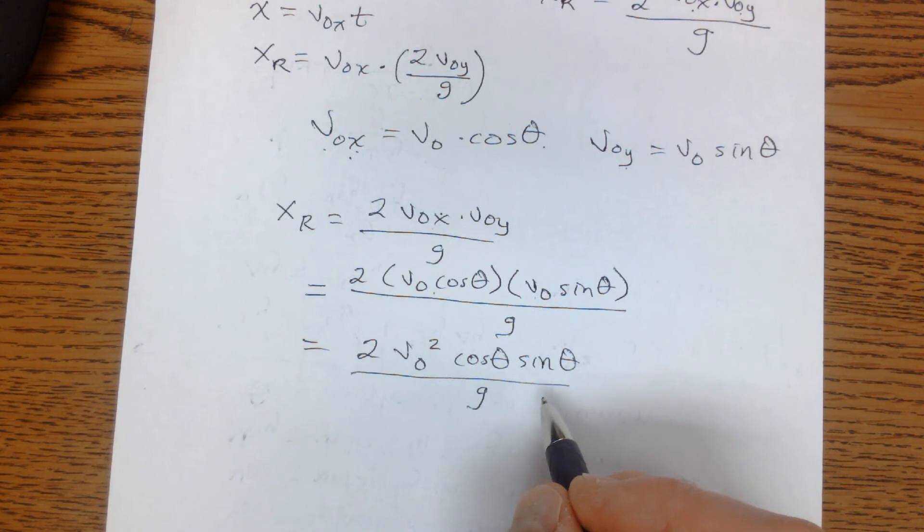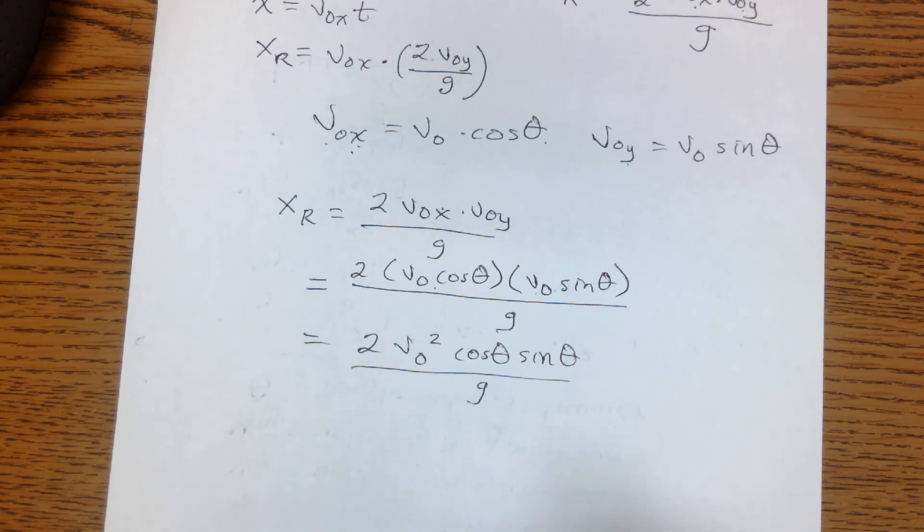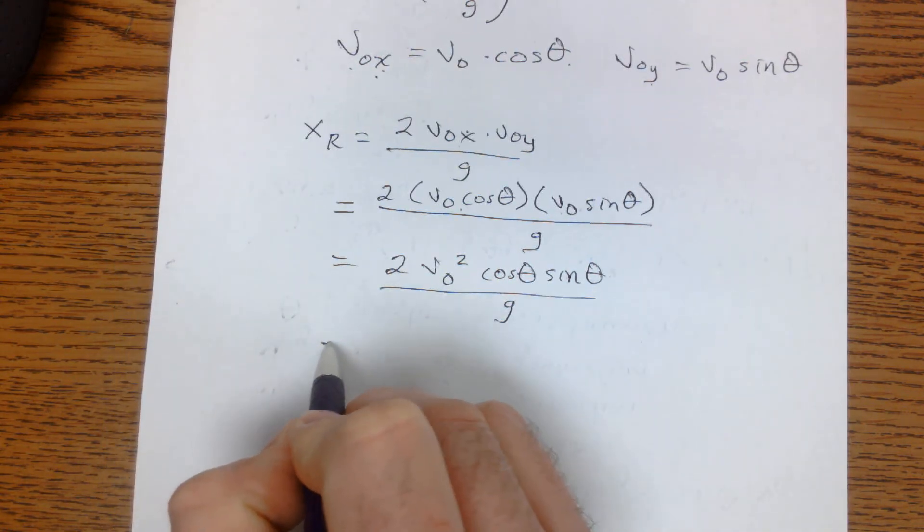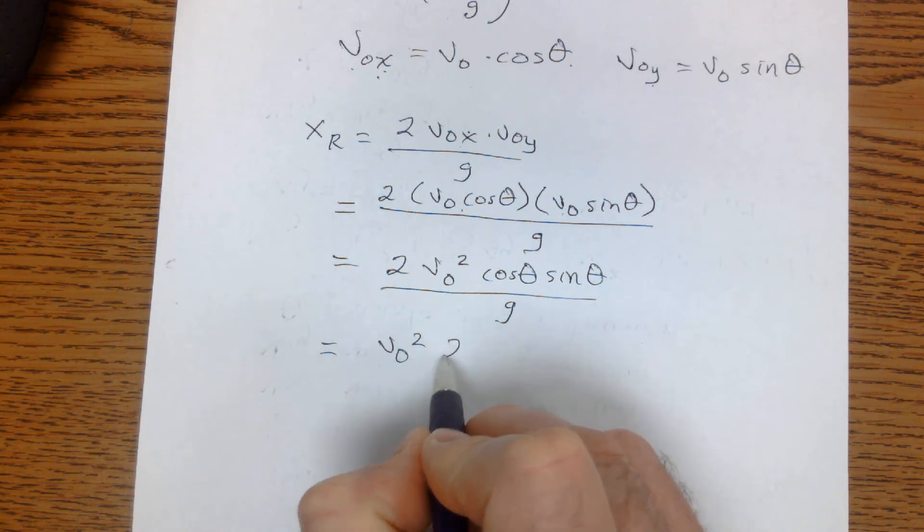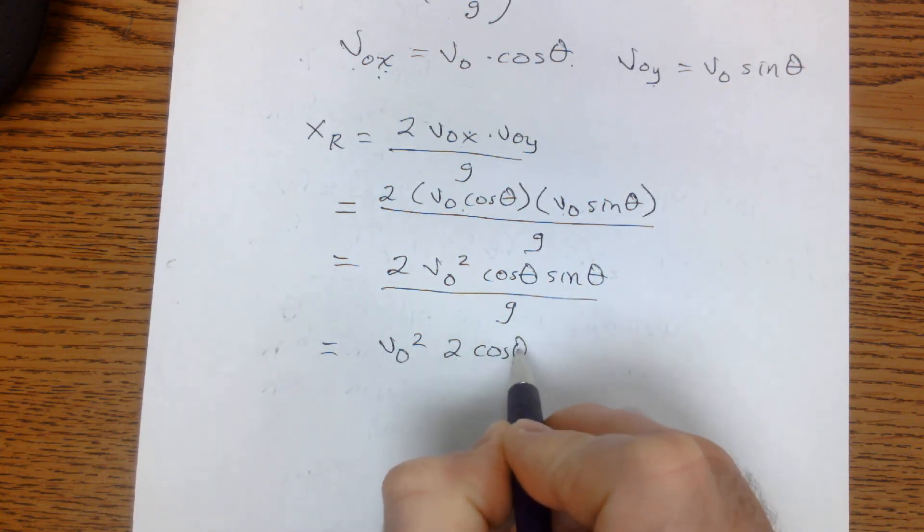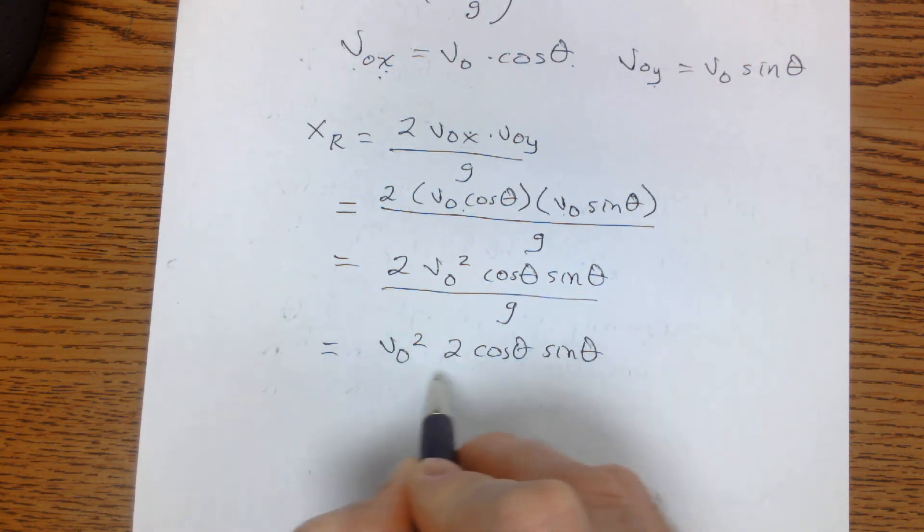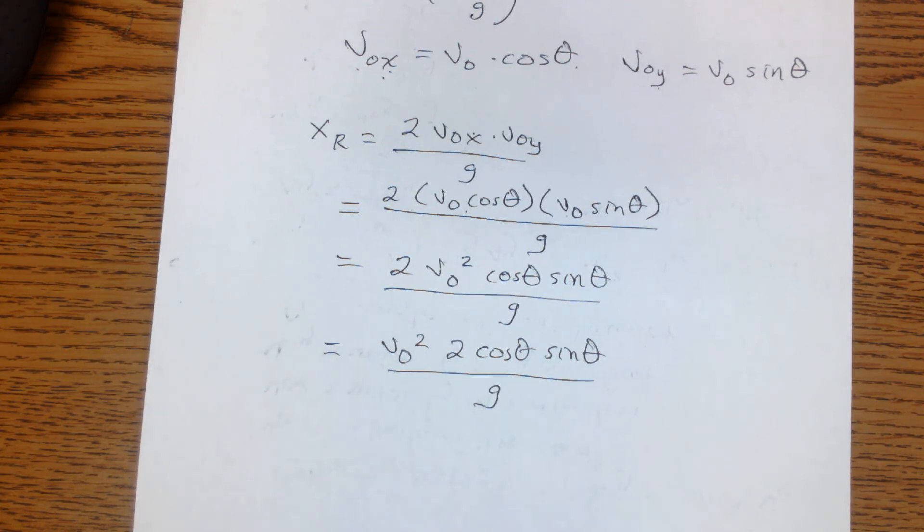And you can stick with that formula if you like. But we can do one more little step here and use a trig identity if you've had those. We'll do a little more arranging and we'll say, look, let's set it up like this. Let's go v0 squared and then 2 cosine theta sine theta over g.